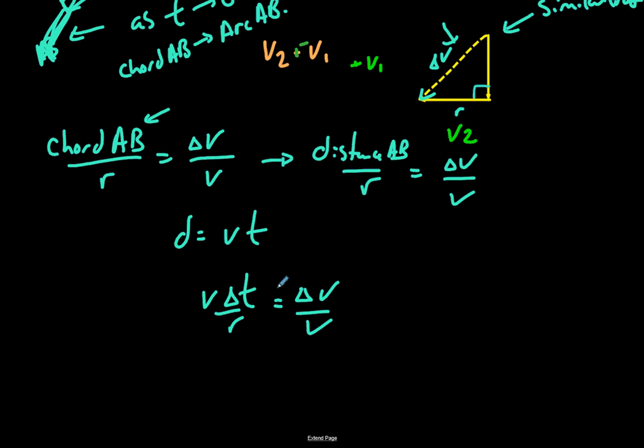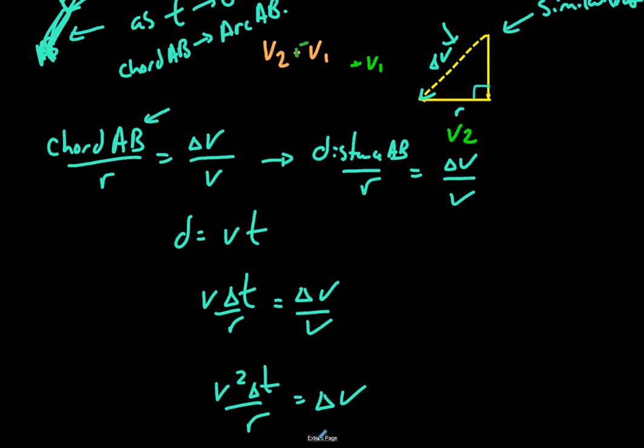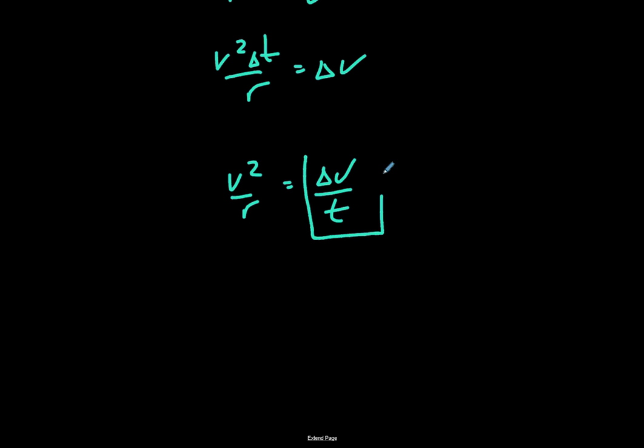And then we're just going to do some algebra on this. So we're going to get V squared times delta T over R equals delta V. We're going to divide off T on the other side. We're going to get this, V squared over R equals delta V over T. And what is this known as? And now we have a new formula that we can use.